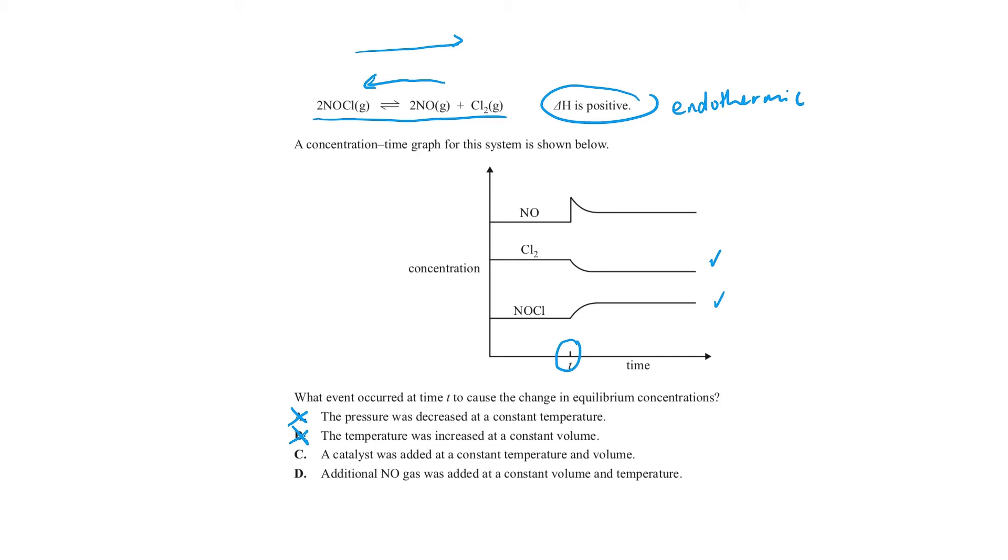In C, it says that a catalyst was added at a constant temperature and volume. Now, in equilibrium, adding a catalyst does not change the point of equilibrium, but merely helps it reach equilibrium earlier. So this is also wrong.